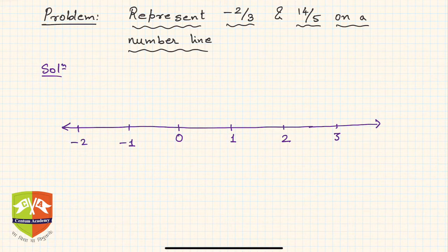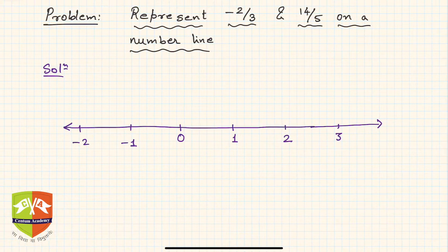Now, where would -2/3 lie? It would lie between 0 and -1, because -2/3 is definitely less than 0 (it's negative), but since it's a fraction, it's not beyond -1. So it will be between 0 and -1.